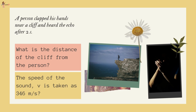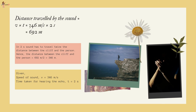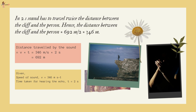Example: A person clapped his hands near a cliff and heard the echo after 2 seconds. What is the distance of the cliff if the speed of sound is 346 m/s? Distance travelled = v × t = 346 × 2 = 692 meters. In 2 seconds, sound travels twice the distance between the cliff and the person. Hence, the distance between the cliff and the person is 692 / 2 = 346 meters.